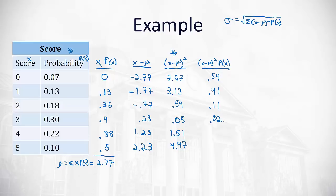And 1.51 times 0.22 is 0.33, and 4.97 times 0.10 is 0.50.